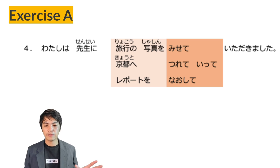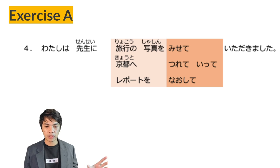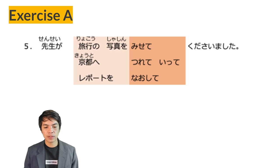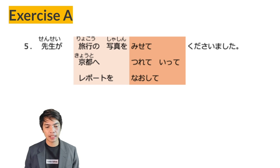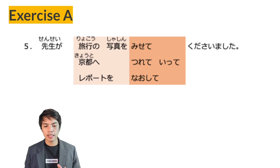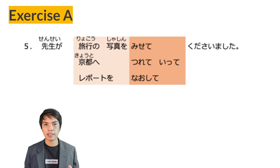Watashi wa sensei ni Kyoto e tsurete itadakimashita — my sensei took me to Kyoto. Watashi wa sensei ni report o naoshite itadakimashita — my sensei checked my report for me. Be careful: because the giver is a sensei — higher status — use itadakimashita instead of moraimashita. Number 5: Sensei ga ryokou no shashin wo mishite kudasaimashita — sensei gave me the favor of showing travel photos. Sensei ga Kyoto e tsurete kudasaimashita — my sensei took me to Kyoto. Sensei ga report o naoshite kudasaimashita — my sensei checked my report.